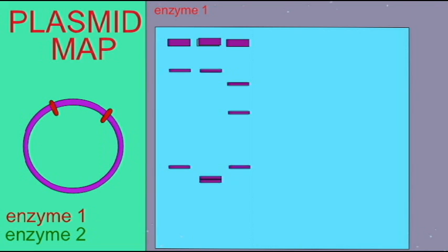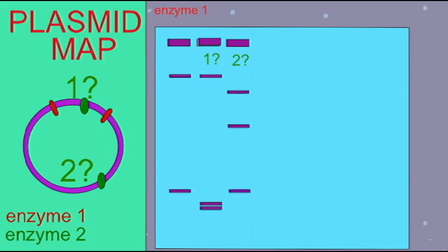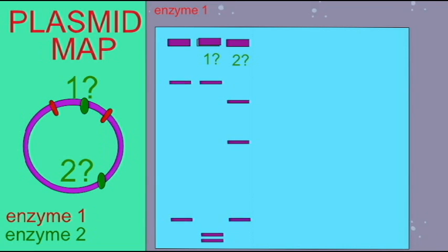Instead, if the cut was made in the larger of the two pieces, then it would be the blue band from the original enzyme, enzyme number one, which was still intact and the yellow band which was not. The yellow band would now have been cut and replaced with two smaller bands which would have migrated farther along the gel.